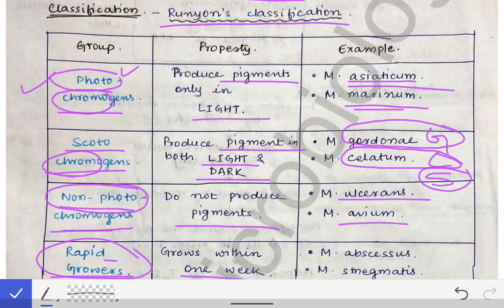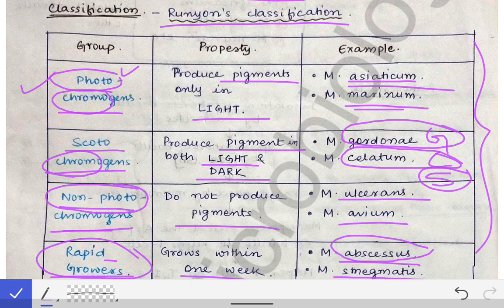For rapid growers: abscesses can grow very rapidly if untreated. So the example of a rapid grower is Mycobacterium abscessus. Another rapid grower to remember is M. smegmatis. This completes Runyon's classification of the non-tuberculous mycobacteria.